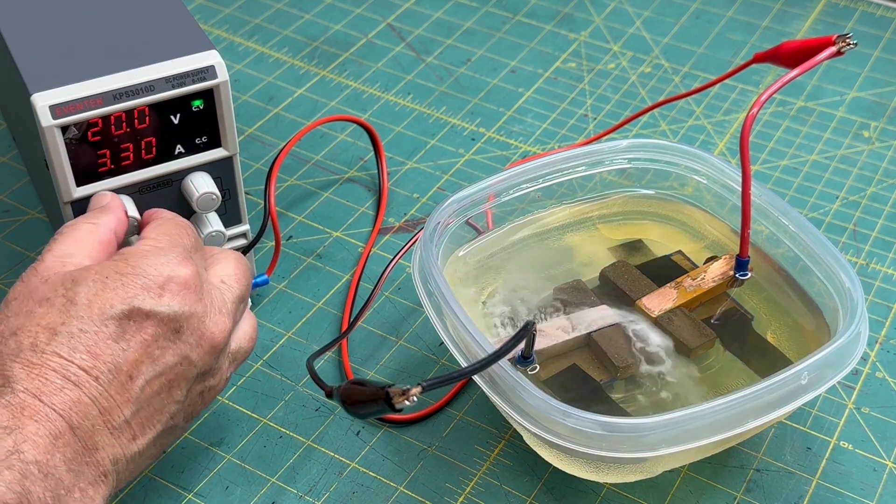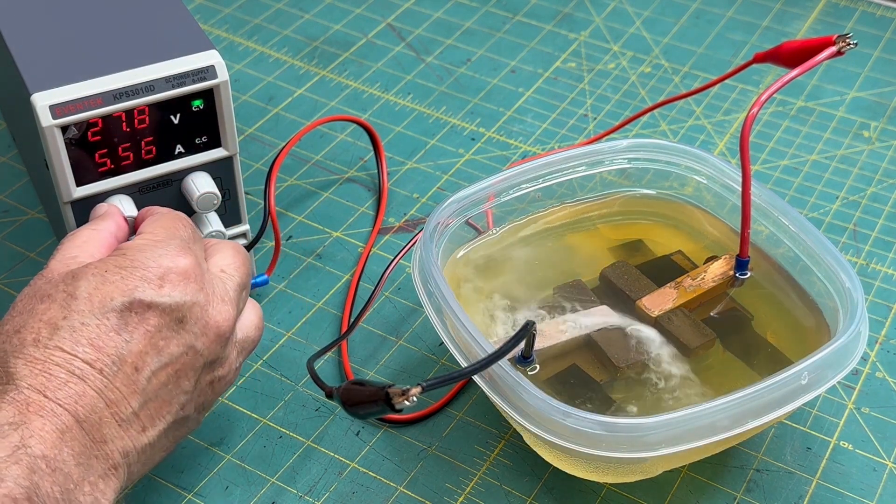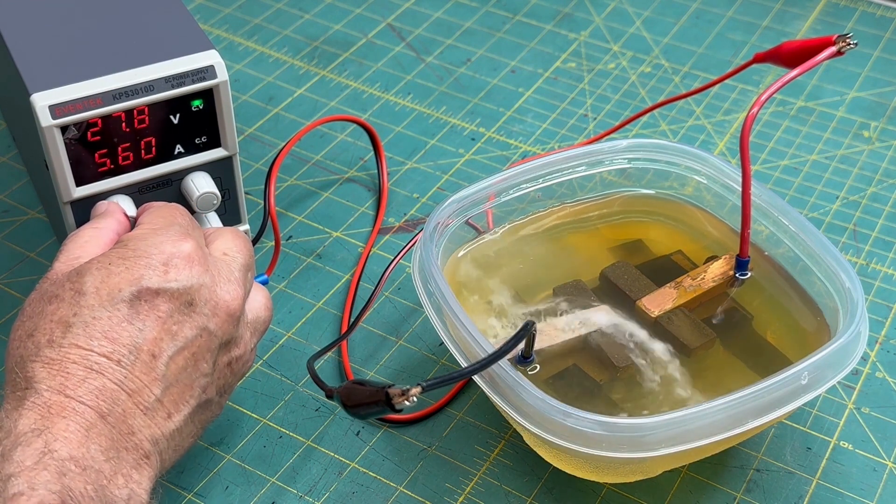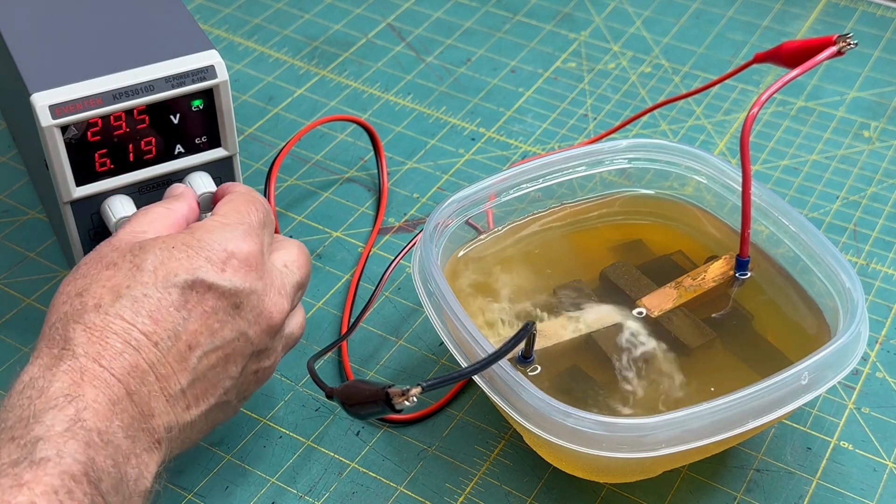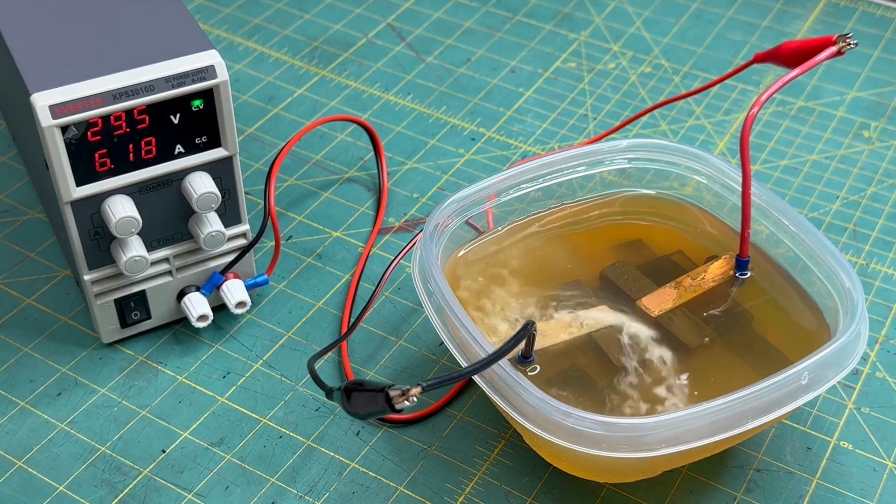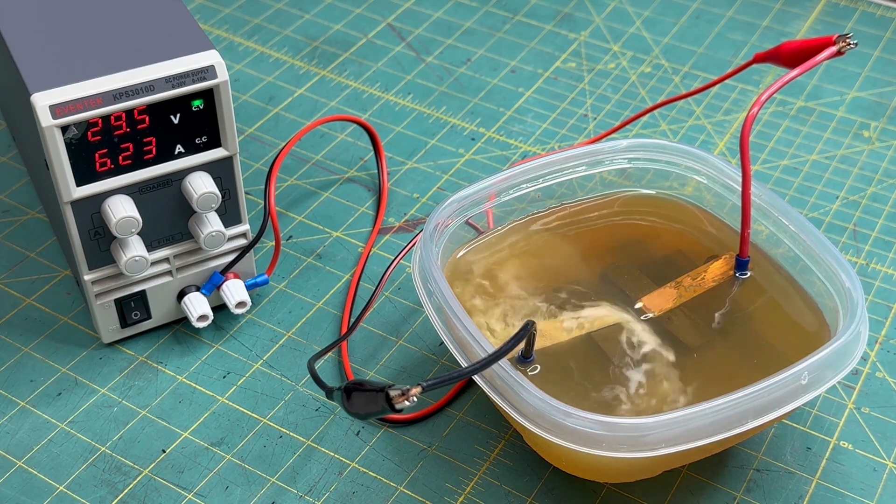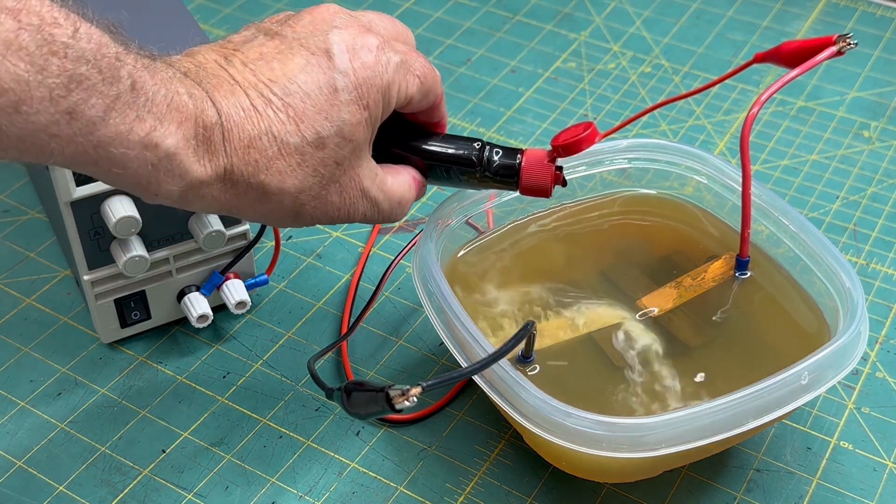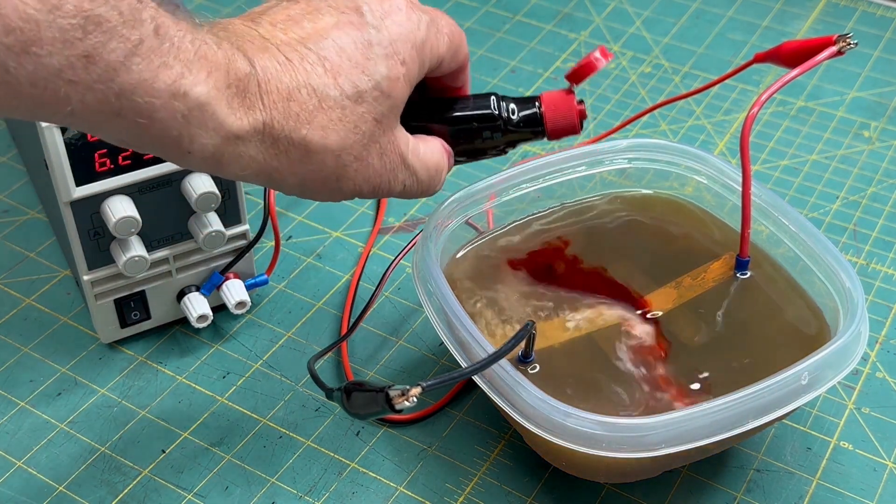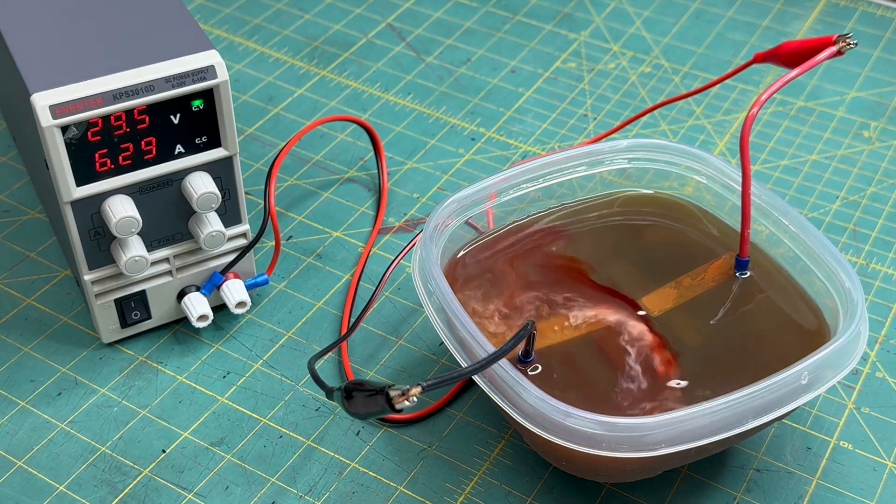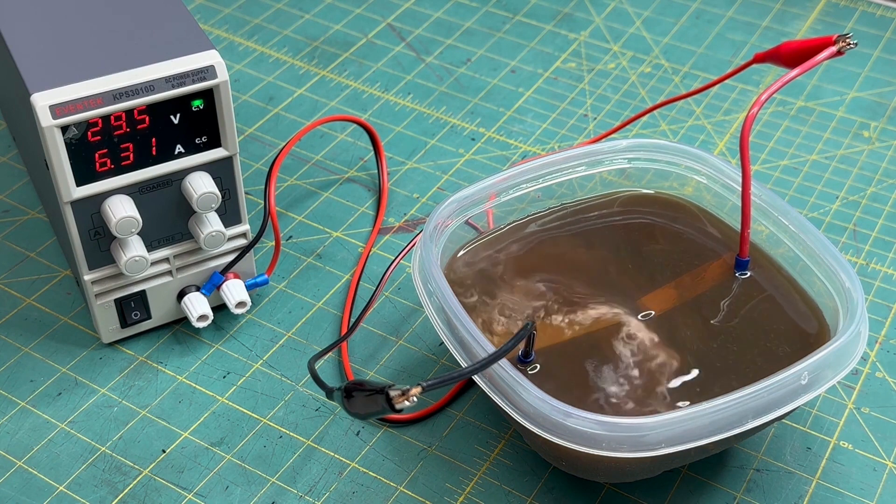Okay, 20 volts and three amps. Okay, we're at 29.5 volts and a little over six amps and it's really moving. I'm going to put a little food coloring in.